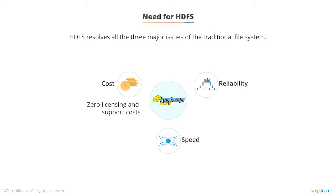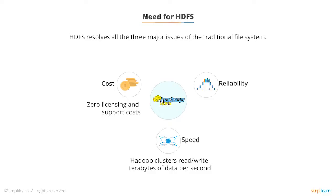Regarding Speed: large Hadoop clusters can read or write more than a terabyte of data per second. A cluster comprises multiple systems logically interconnected in the same network. HDFS can easily deliver more than two gigabits of data per second per computer to MapReduce, which is a data processing framework of Hadoop.